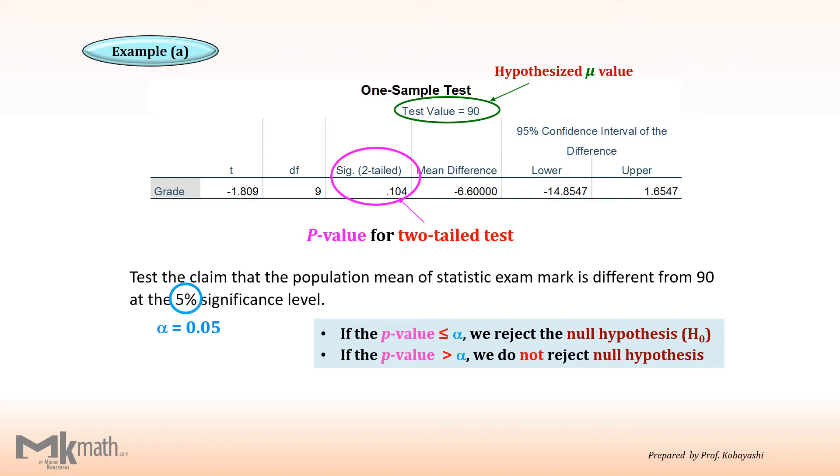In this case, we have p-value 0.104 is greater than alpha value 0.05. We do not reject H0.